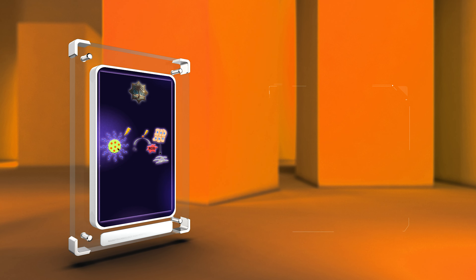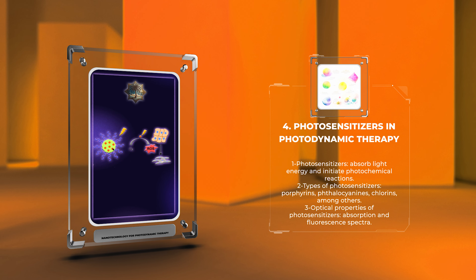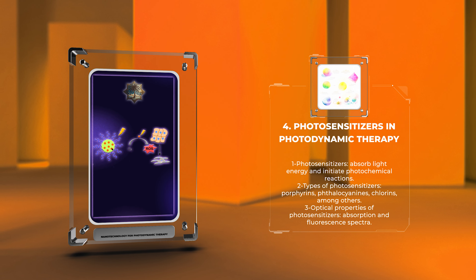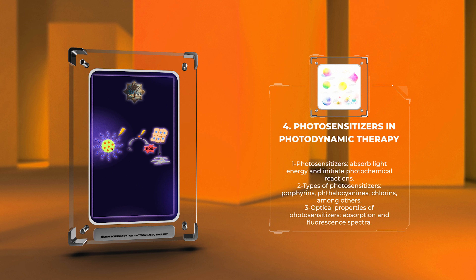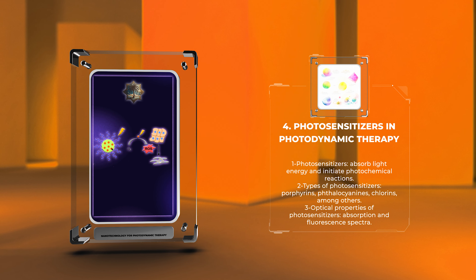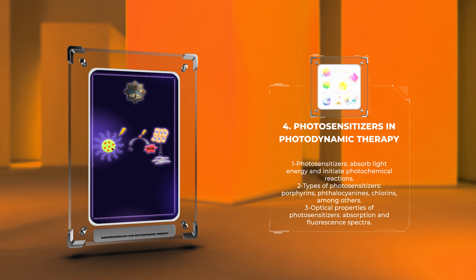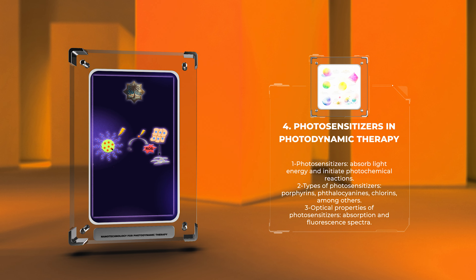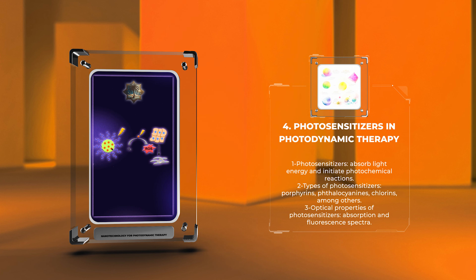Photosensitizers are essential components of photodynamic therapy, as they are responsible for absorbing light energy and initiating the photochemical reactions. A wide range of photosensitizers exist, including porphyrins, phthalocyanins, and chlorins, among others. Each photosensitizer has unique optical properties, such as absorption and fluorescence spectra, which dictate their efficiency in generating reactive oxygen species upon light activation. The choice of photosensitizer also depends on factors like wavelength of light used, tumor type, and desired treatment outcome.